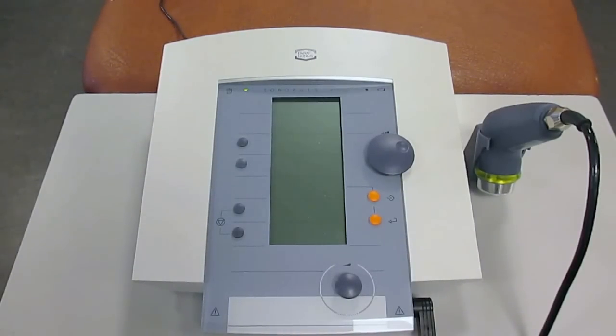This is a video on the Enrath Nonius Sonopulse 490, which is a therapeutic ultrasound often used by athletic trainers as well as physiotherapists for treatment of soft tissue injuries. In this video, we'll look at some of the parameters as well as some of the functions of this particular machine, what it can do.